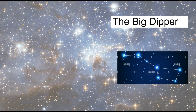Another very common constellation we can see in the sky is the Big Dipper. Maybe if the sky is clear tonight, you can go outside and find it — it has seven stars. See if you can find the Big Dipper; it looks like a spoon.